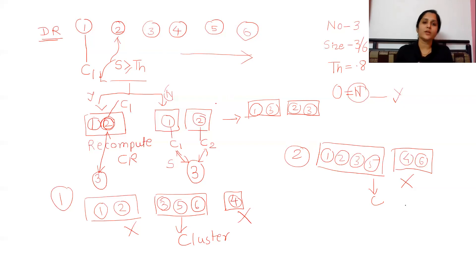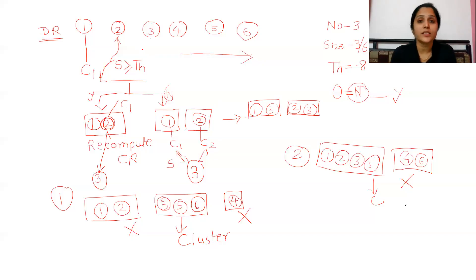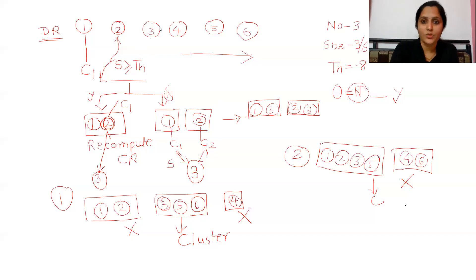This is how the Single Pass Algorithm works. Because it starts with certain assumptions — treating the first document as the initial cluster representative — it is able to form clusters in a single scan of the document repository. I hope you have understood what exactly the Single Pass Algorithm is and how it works.